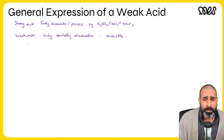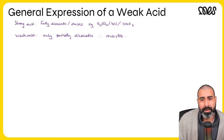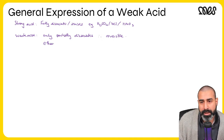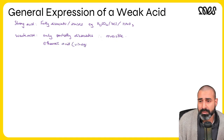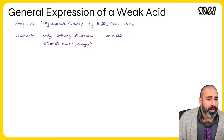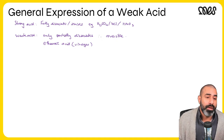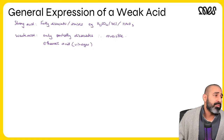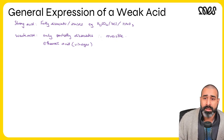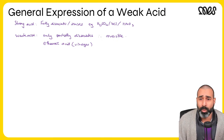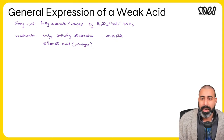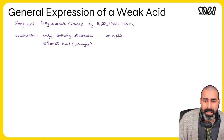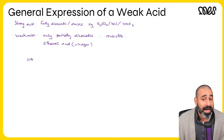What weak acids might you have come across? The one we always use is ethanoic acid. Ethanoic acid is a weak acid — it's commonly called vinegar. Dilute HNO3 would still be a strong acid, just a dilute one. So ethanoic acid is the one most people have heard of, and in today's beginning part of the lesson we're going to explore weak acids in more detail.